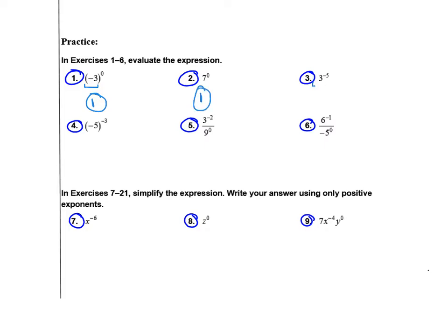When I see 3 to the negative 5th power, that tells me that instead of multiplying by 3, those 3s are going to be on the bottom — so we're actually dividing by 3 five times. You could leave it as 1 over 3 to the 5th, or if you grab your calculator and figure out 3 to the 5th power, you could leave it as 1 over 243. Either one is fine.